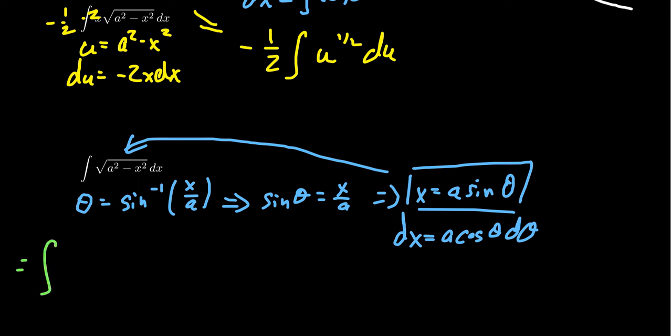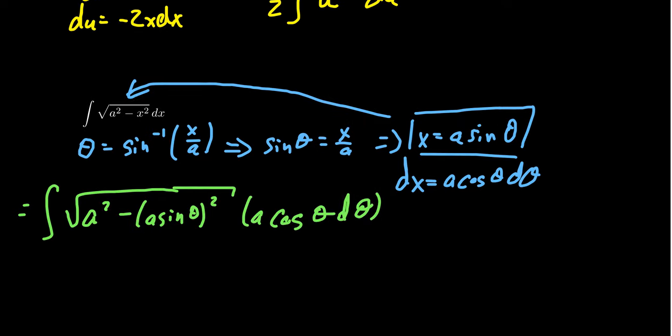So you take the integral, you're going to take the square root of a squared. And then the x becomes an a sine theta squared. And then the dx becomes an a cosine theta d theta. Again, just have some hope on what's going on here.